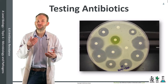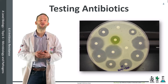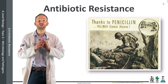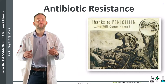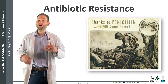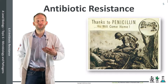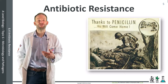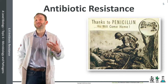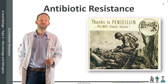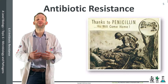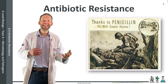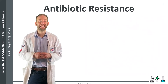When antibiotics were first introduced after World War II they were called wonder drugs, as they seemed to cure all bacterial diseases. However, within just a few years some bacteria became resistant to the drugs. Bacteria developed resistance via mutation — these mutations occur when bacteria reproduce and mistakes are made in copying their DNA.